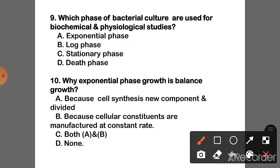Question 9: Which phase of bacterial culture is used for biochemical and physiological study? The correct answer is Option A — Exponential phase.